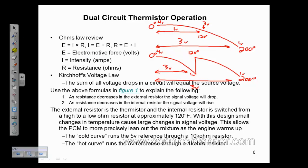Why do we use a step thermistor? Because the computer can more accurately read the warm-up period. In the top picture, it may take five degrees of temperature change to get a voltage change, but in the bottom picture, voltage will change within one degree of temperature change. Which one's more precise?